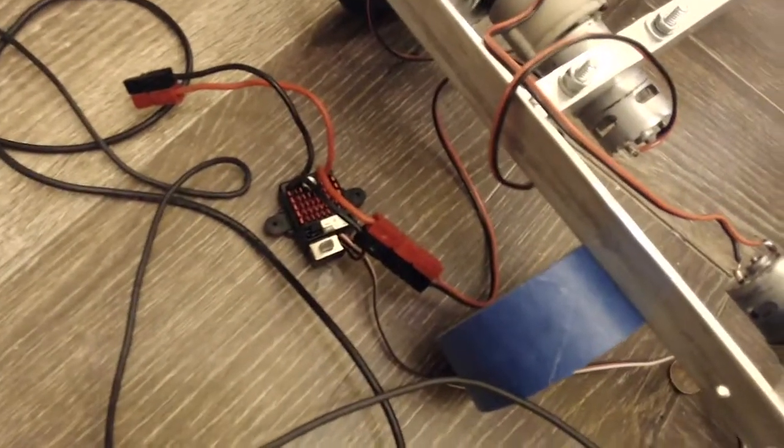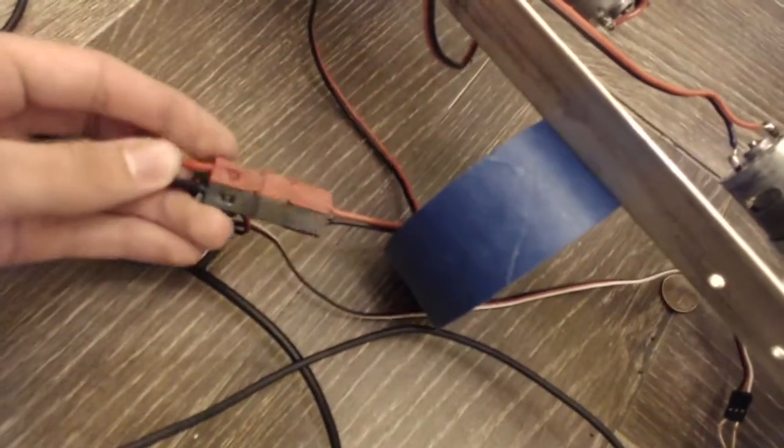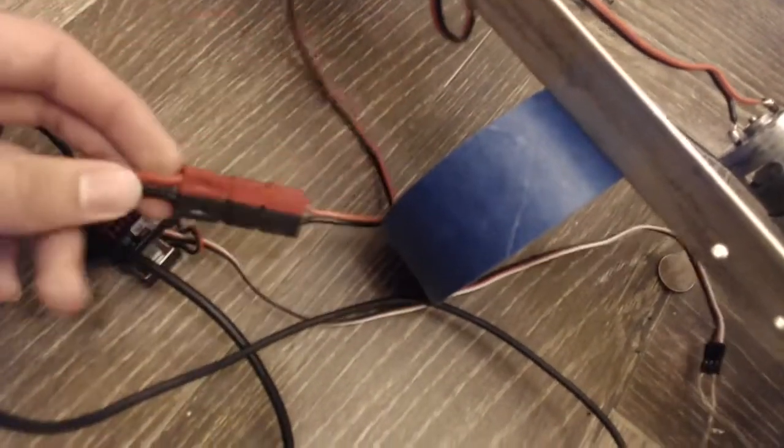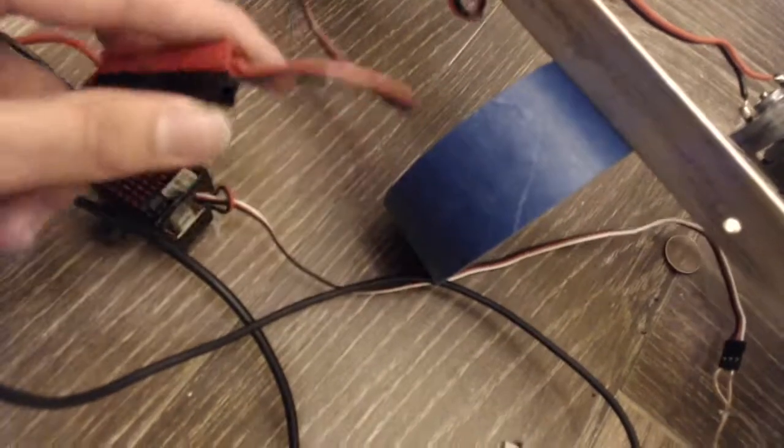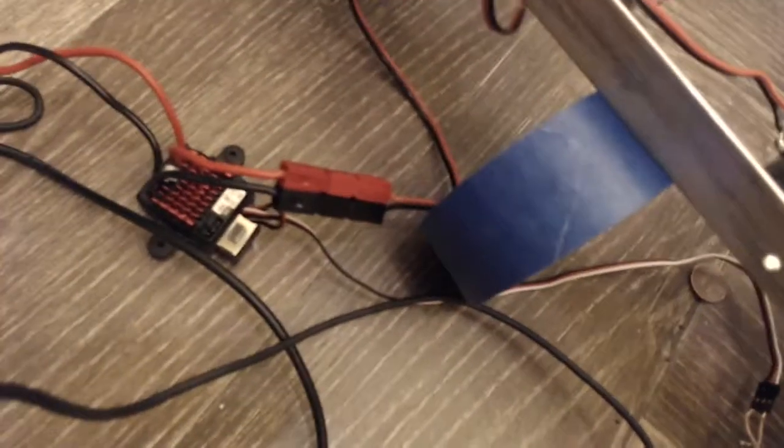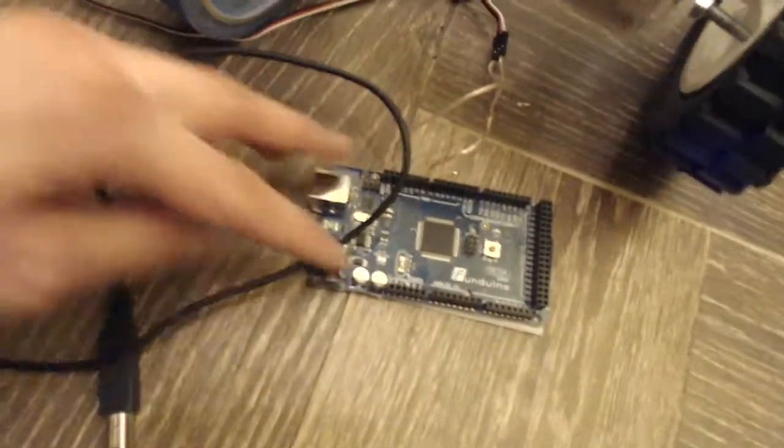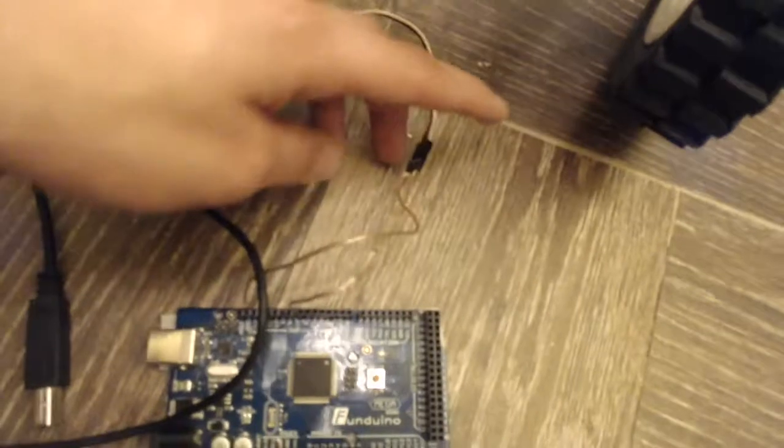And also with this speed controller there's another problem with how this wire was. This wire it just wouldn't make contact with the other wire on the positive side, so I had to wiggle it around to make it even contact. And it would only work several times as well.